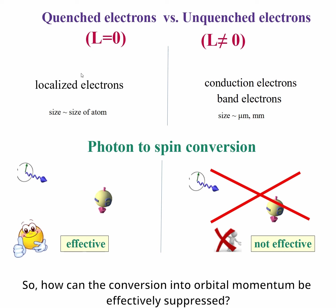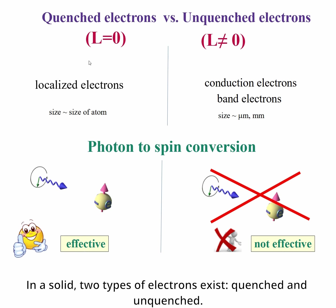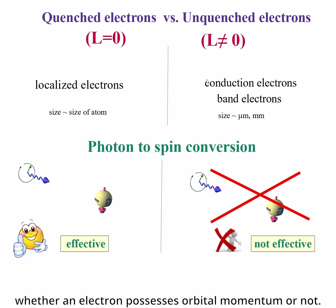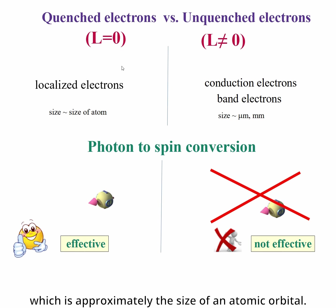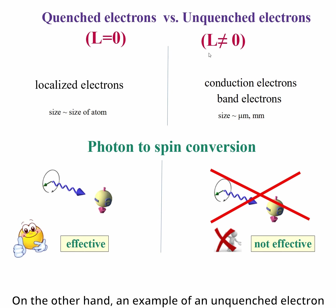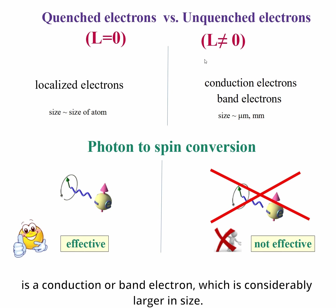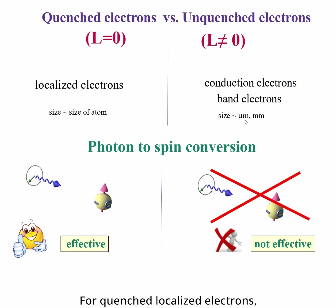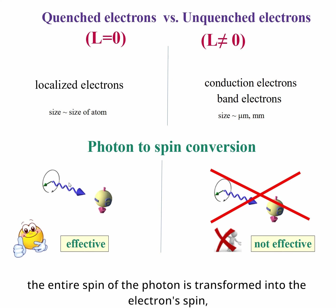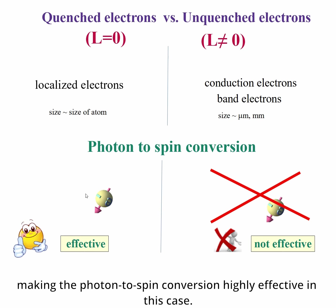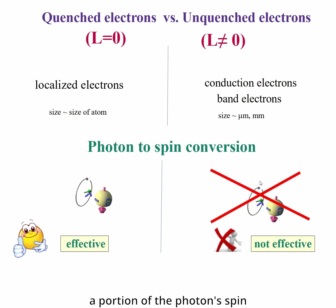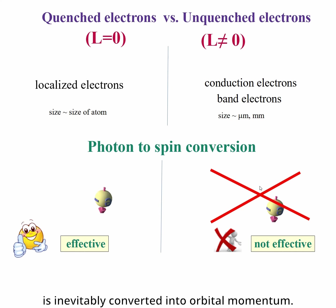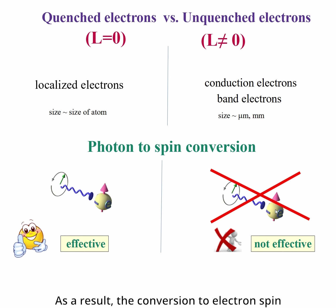So how can the conversion into orbital momentum be effectively suppressed? In a solid, two types of electrons exist: quenched and unquenched. Quenching refers to whether an electron possesses orbital momentum or not. A typical example of quenched electrons is localized electrons, which are approximately the size of atomic orbitals. An example of unquenched electrons is a conduction or band electron, which is considerably larger in size. For quenched localized electrons, the entire spin of the photon is transformed into the electron spin, making photon-to-spin conversion highly effective. Conversely, with unquenched conduction electrons, a portion of the photon's spin is inevitably converted into orbital momentum, making the conversion to electron spin less effective.